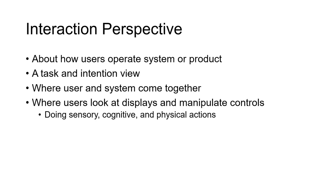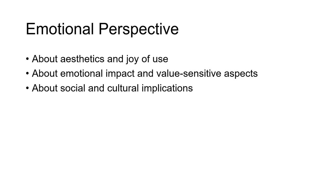The second perspective is the interaction perspective, where we see how users are going to interact with the system or product — are the users going to do the task right, are they clicking on the proper buttons, etc. The third perspective is the emotional perspective, where we look at various emotions of the user while using the product or system, such as happy, joy, sad, etc.